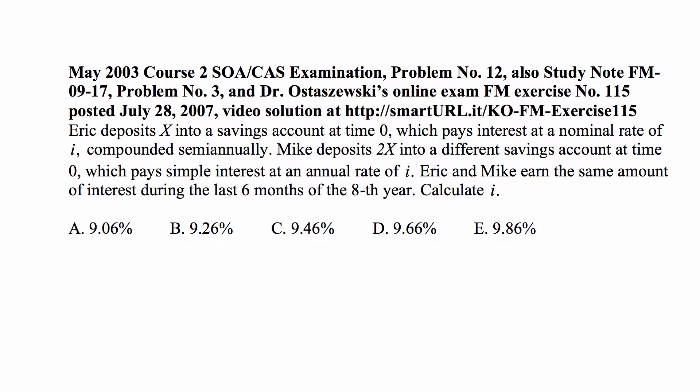Here's the problem for today. Eric deposits X into a savings account at time zero, which pays interest at a nominal rate of I compounded semi-annually. Mike deposits 2X into a different savings account at time zero, which pays simple interest at an annual rate of I. Eric and Mike earn the same amount of interest during the last six months of the eighth year. Calculate I.